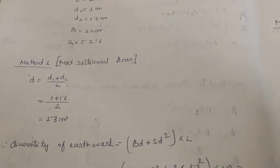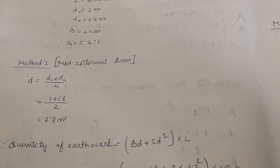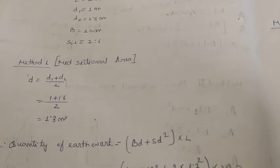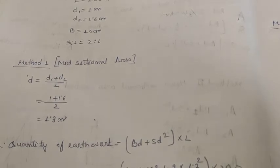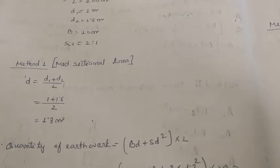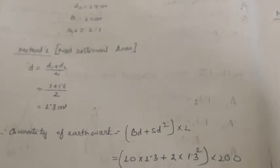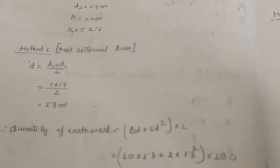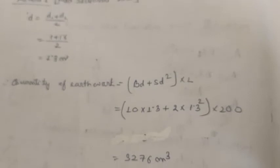Let us first see mid-sectional area formula. Since two depths are there, you are going to do d = (d1 + d2)/2. Put the values: (1 + 1.6)/2, you found out d is 1.3.